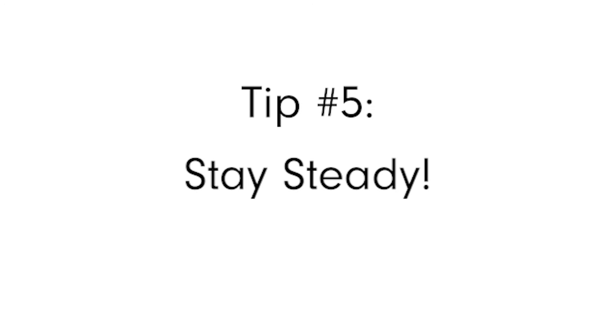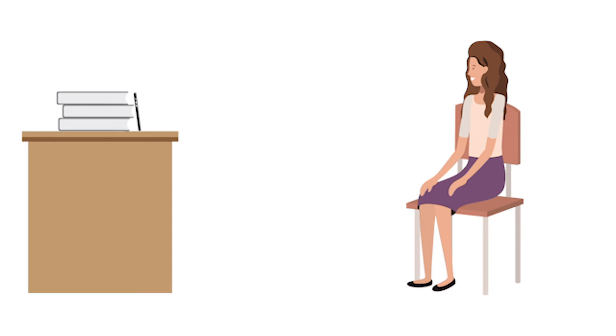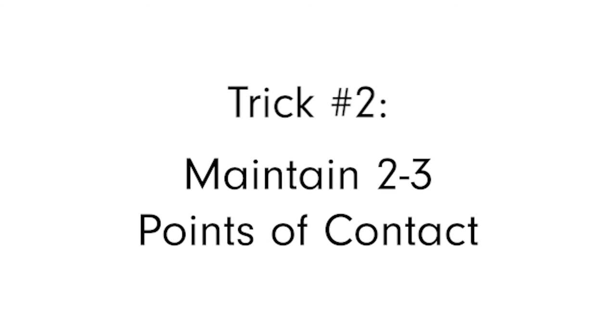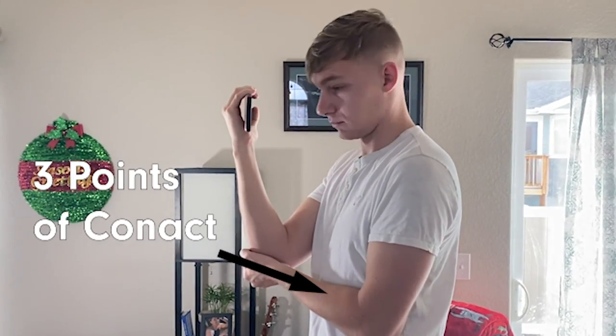Tip number five: stay steady. Rocky and constantly moving videos are hard to keep up with and cause some people to stop watching. Here are a couple of helpful tricks to keep your camera steady. Trick number one: prop it up against something that's not moving. If your video is an interview style where you or someone else is talking to the camera, propping it up against another object is a great way to keep your camera steady. Trick number two: maintain two to three points of contact. By holding your phone with one hand with a wide grip, then using your other hand to grip your elbow, and resting that elbow on your hip or stomach, you create a steadier position — it's almost like creating a human tripod.